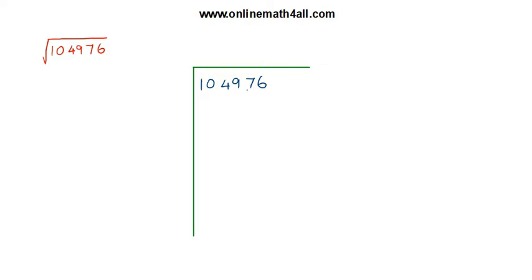In finding the square root of a number using long division, the first step is we have to separate the digits of the given number as pairs from right to left. So I start from the right side of the given number, and I separate the digits using commas as pairs.